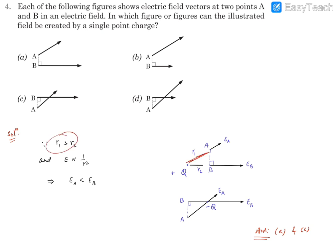So since R1 is more, and as per this 1 upon R square relation, we can say for R1 field will be smaller. That means EA is going to be smaller. EB is going to be larger.